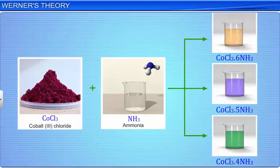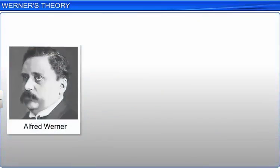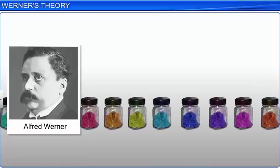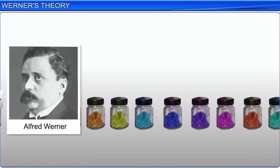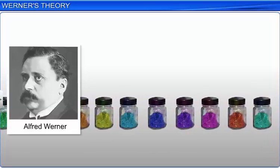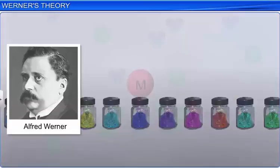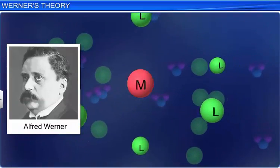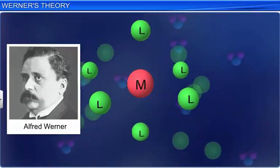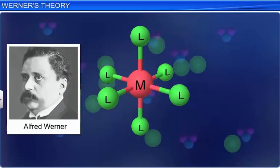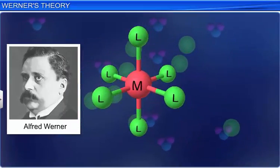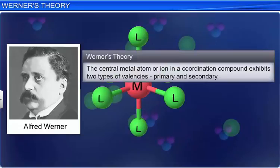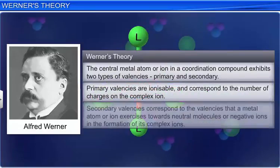Alfred Werner, a Swiss chemist, after preparing thousands of new compounds and studying their properties, put forward a theory to explain the formation of complex compounds. It was the first successful explanation for the phenomenon. The theory became famous as the Coordination Theory of Complex Compounds, which is also known as Werner's Theory.